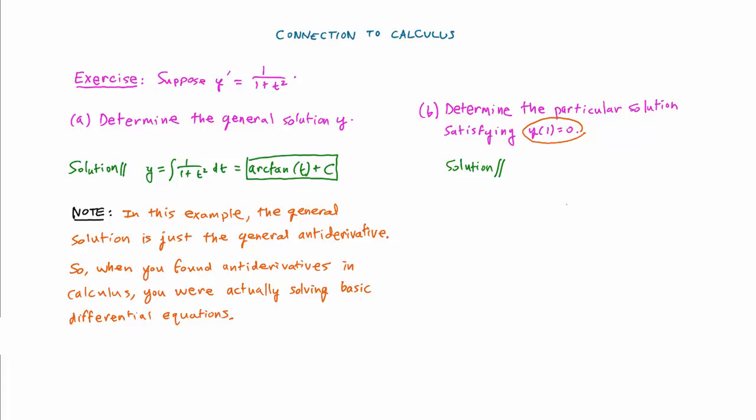And to do that, we substitute the information into the formula for our solution. We know that y would have to equal 0 when t is equal to 1, and that enables us to solve for c. You just have to understand that the arctangent of 1 is pi over 4. And from there, we get that c is equal to negative pi over 4. And therefore, y must equal arctangent of t minus pi over 4. And this is the particular solution satisfying y of 1 equals 0.